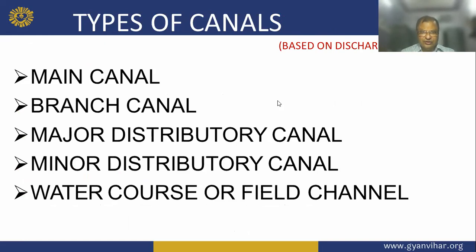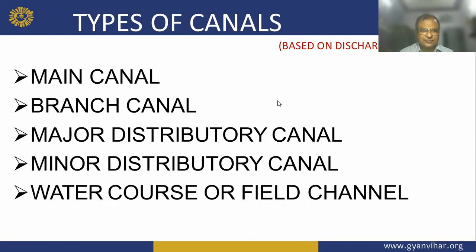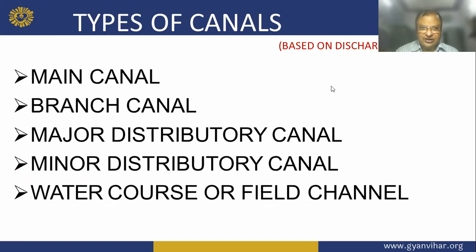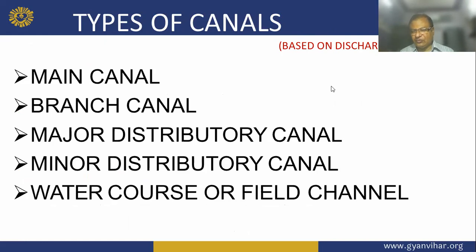Water supply canals are used for the conveyance and delivery of potable water for human consumption, municipal use, and agricultural education. And waterways for navigation and transportation can be used for carrying ships and boats, shipping goods, or conveying people. Type of canal based on discharge — there are five types of canal: main canal, branch canal, major distributory, minor distributory, and water course.